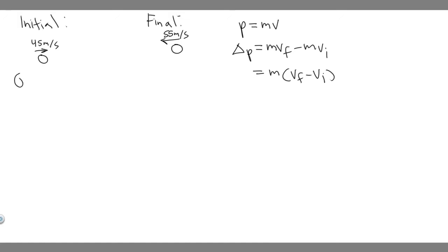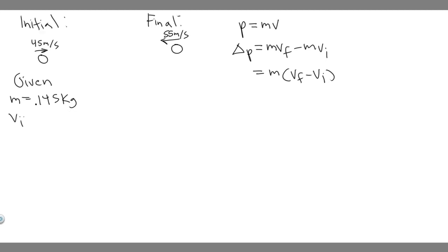Let's write down the given values. The mass is 0.145 kilograms. The initial velocity is 45 meters per second. The final velocity is minus 55 meters per second, because it's traveling to the left and we assume rightward is positive.